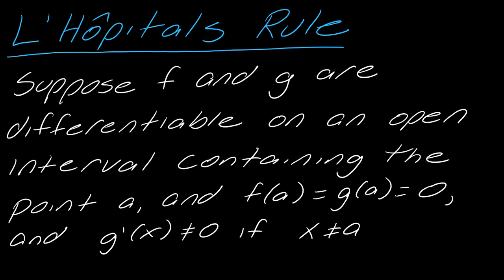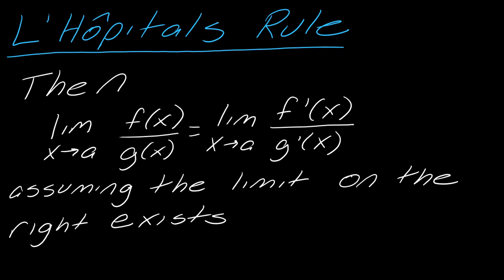So L'Hopital's rule. Suppose that you have two functions, f and g, and they're differentiable on an open interval and that interval contains the point a and f(a) and g(a) equals 0. And the derivative of g does not equal 0 if x does not equal a. So it's okay if it equals 0 at a, but anywhere else it should not. So here is L'Hopital's rule. The limit as x approaches a of f(x) over g(x) is equal to the limit as x approaches a of f'(x) over g'(x), assuming the limit on the right exists.